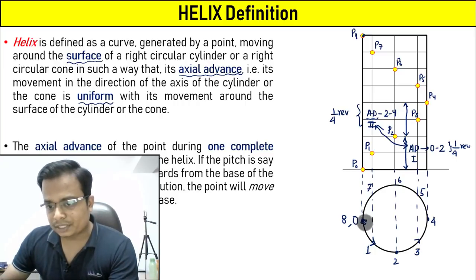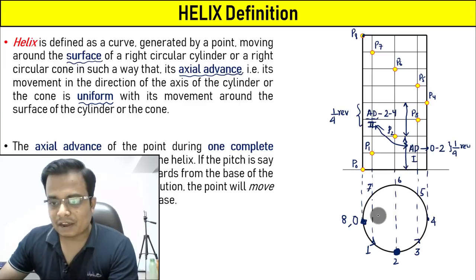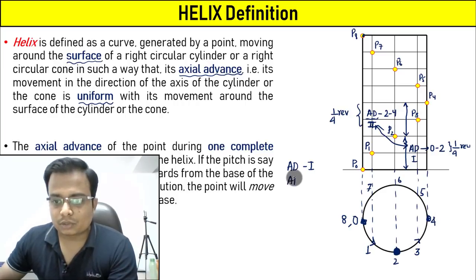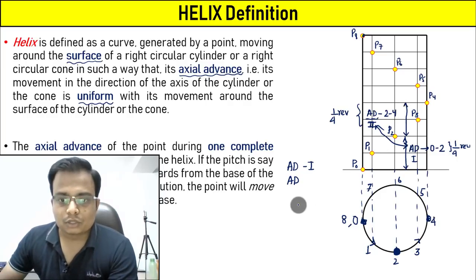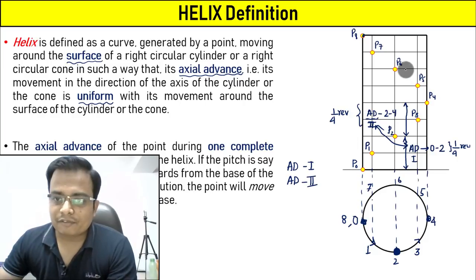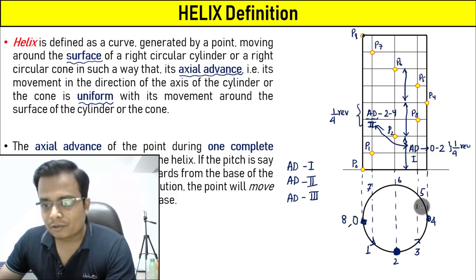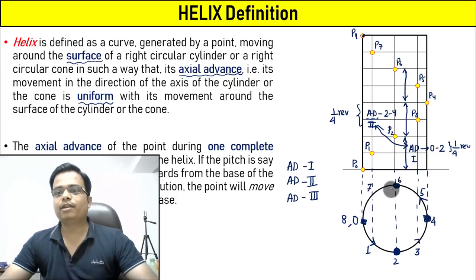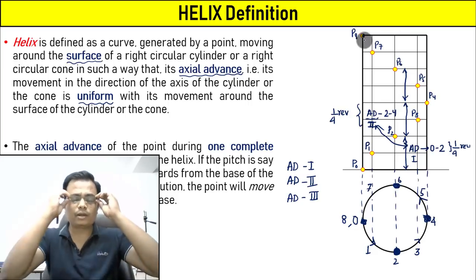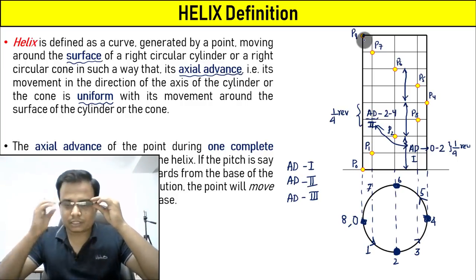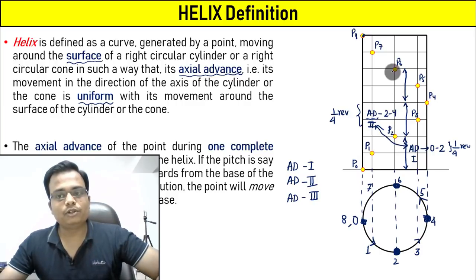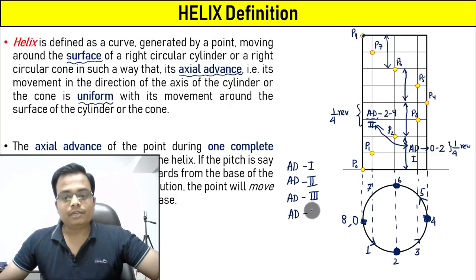So for the first quarter revolution, the distance traveled was axial advance one. Between points two and four, this is axial advance two. Between four and six, axial advance three. Between six and eight, axial advance four. All of them are going to be the same for each one-fourth of the revolution. AD remains the same. And when this is so, the sort of curve that you are going to get is a helix.